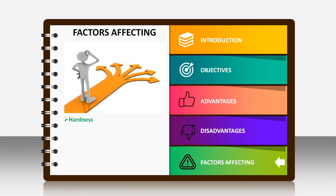Moving to the factors affecting size reduction. The first factor is hardness — hardness is a surface property of a material, measured by a device known as the Mohs scale. The harder the material, the more difficult it is to reduce in size.